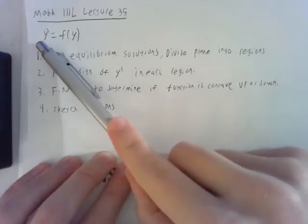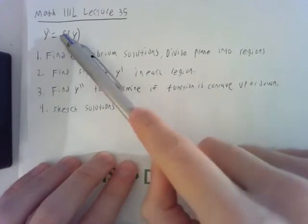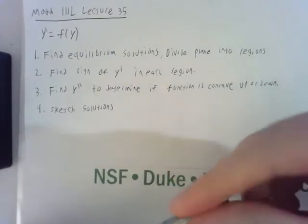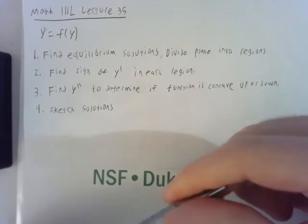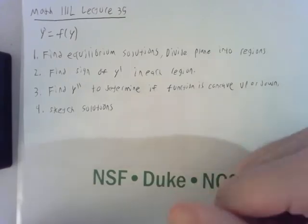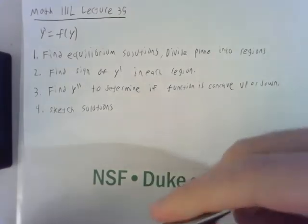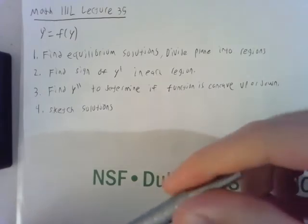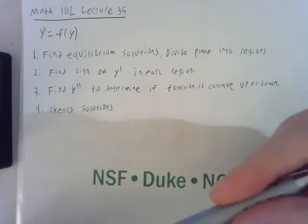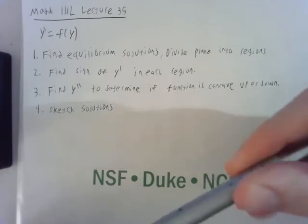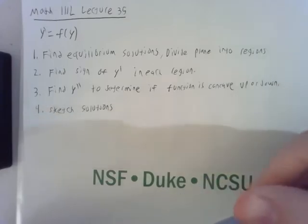We'd have to divide by f of y and then find the antiderivative of 1 over f of y. If f is a complicated function that might be impossible to do, even if it is possible it might be some really inconvenient formula that we really just don't want to deal with. So sometimes it's enough just to get a rough idea of how this solution is behaving, and we can do this using the following procedure.